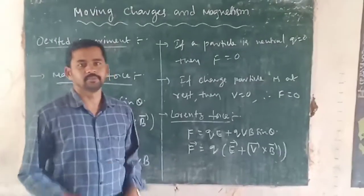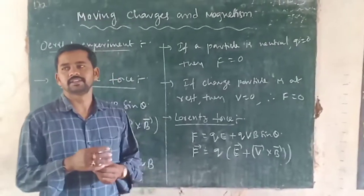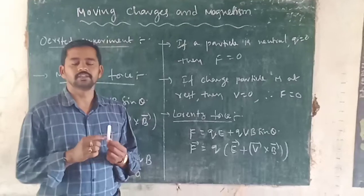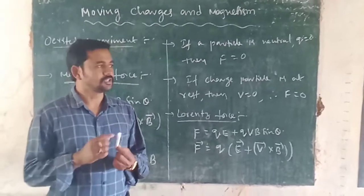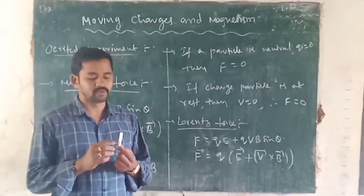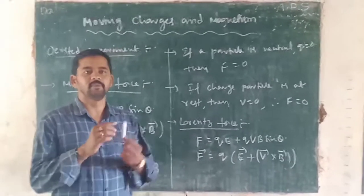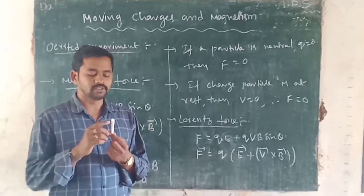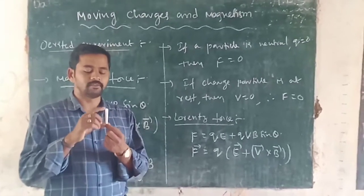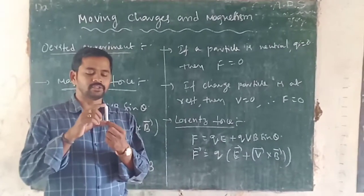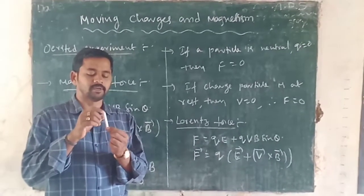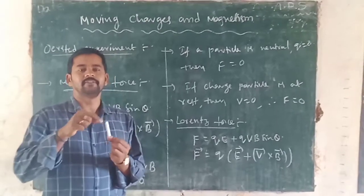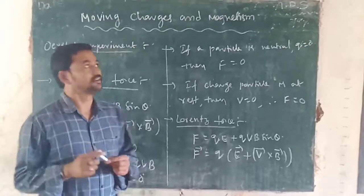Generally, suppose if we take any conductor, whenever the charges are moving, current will be flowing through this conductor. Due to this current flowing through the conductor, around the conductor, a magnetic field will be generated.